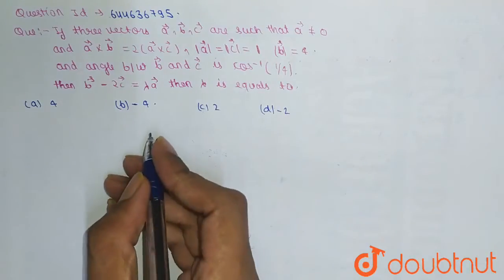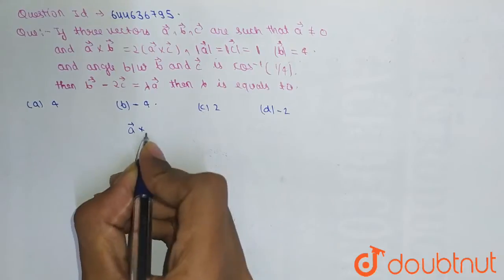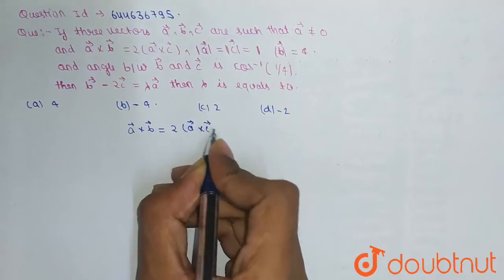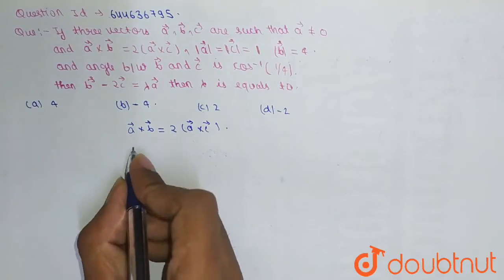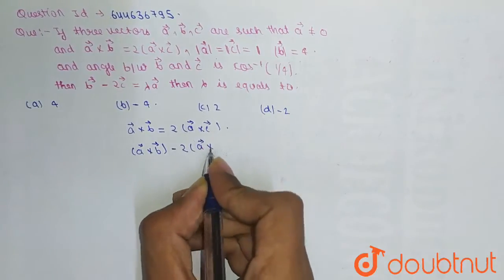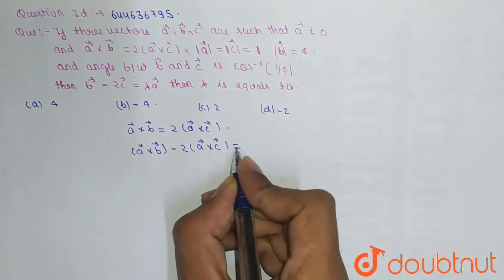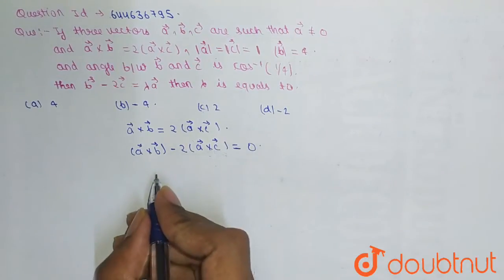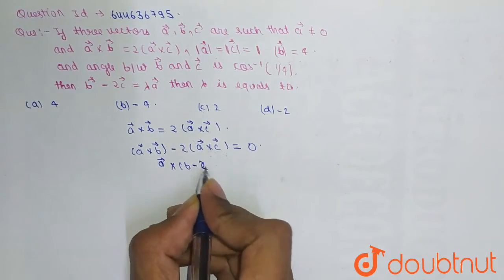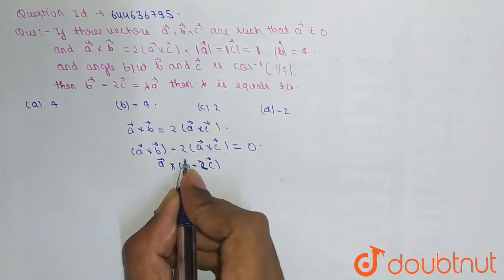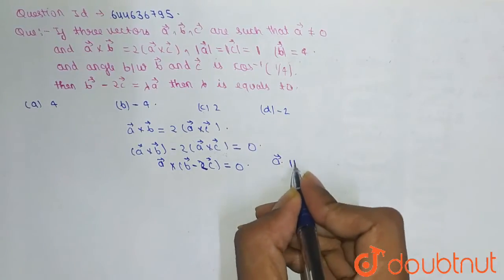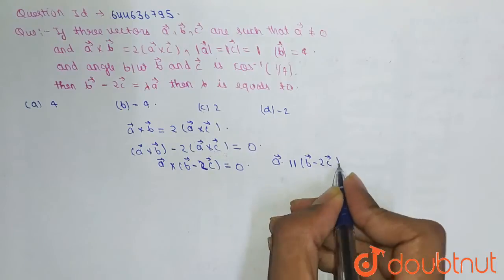As we are given that a cross b equals twice a cross c, we can write this as a cross b minus 2 times a cross c equals zero. Taking a as common, we get a cross (b minus 2c) equals zero. From this, we conclude that a is parallel to (b minus 2c).